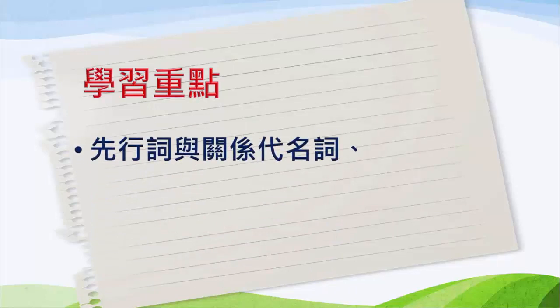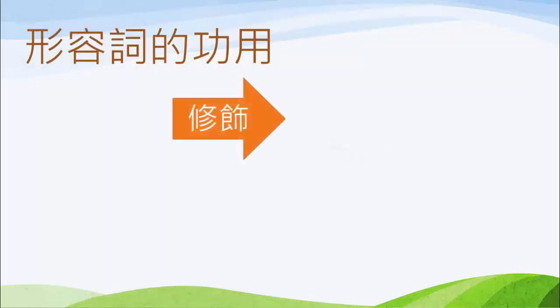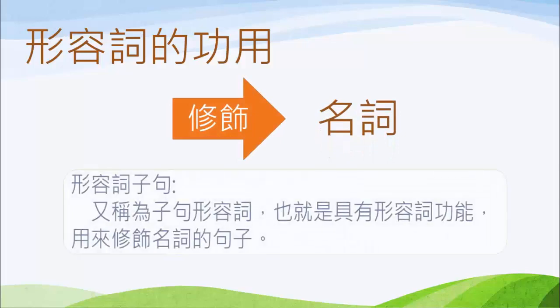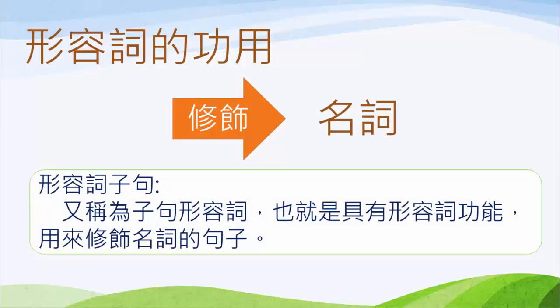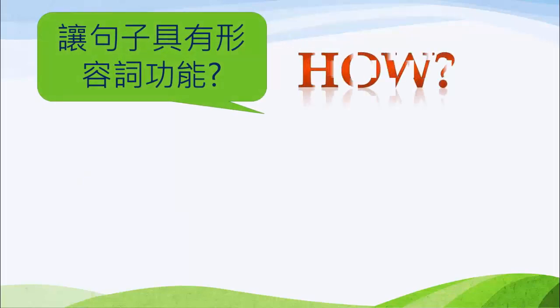今天的學習重點，我們將學到什麼叫做先行詞，什麼又是關系代名詞，以及所謂的形容詞子句。我們以前有學到形容詞的功用在修飾名詞，而形容詞子句就是具有形容詞功能、用來修飾名詞的句子，讓句子具有形容詞的功能。